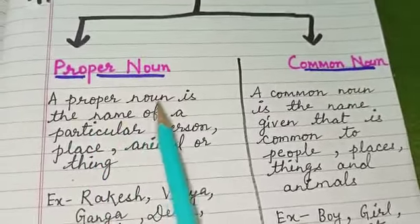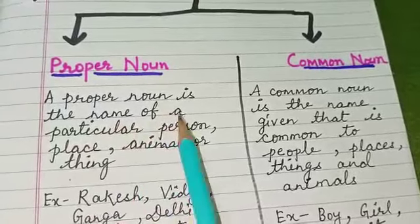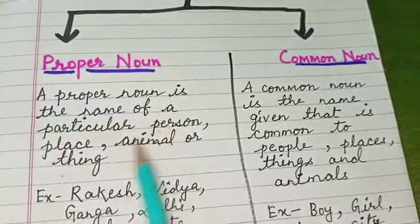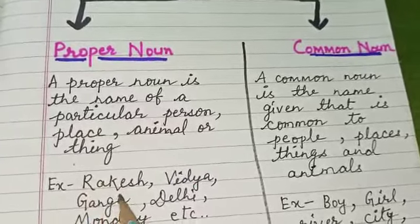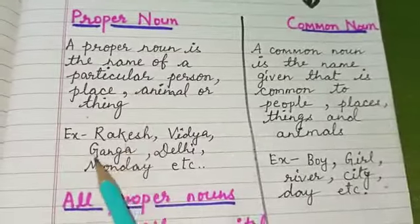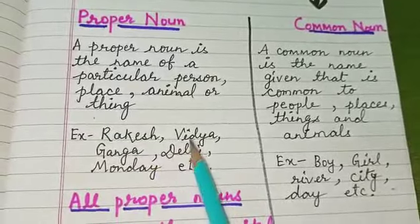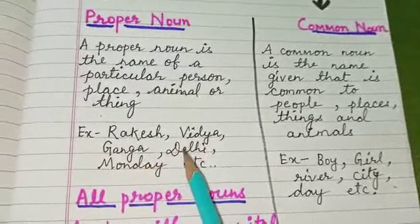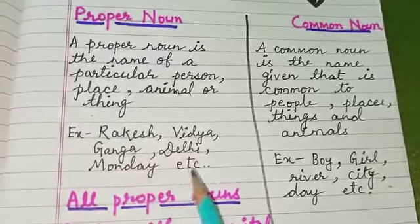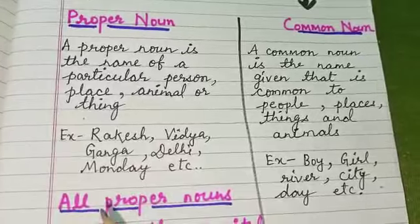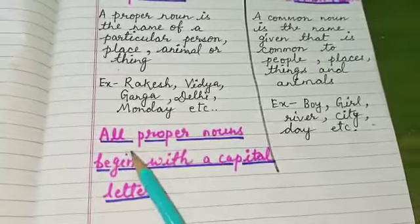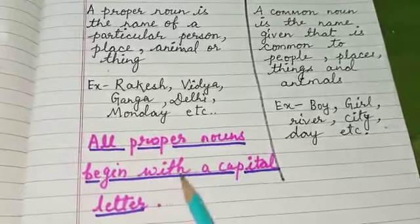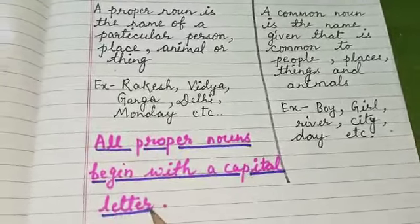A proper noun is the name of a particular person, place, animal, or thing. Let's see some examples: Rakesh, Vidya, Ganga, Delhi, Monday, etc. One more important thing about proper nouns — all proper nouns begin with a capital letter.